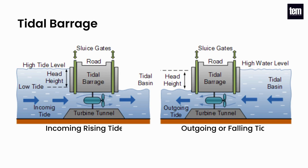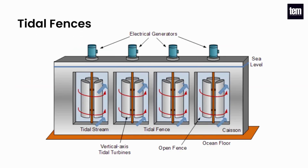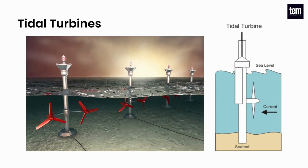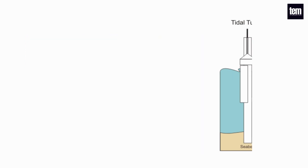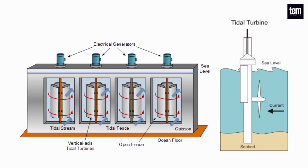A tidal barrage is a dam that utilizes the potential energy generated by the change in height between high and low tides to drive turbines and generate electricity. Tidal fences are turbines that operate like giant turnstiles, while tidal turbines are similar to wind turbines only underwater. In both cases, electricity is generated when the mechanical energy of tidal currents turns turbines connected to a generator.